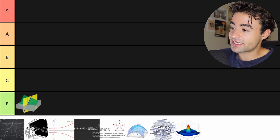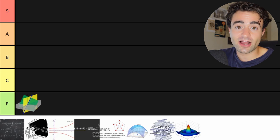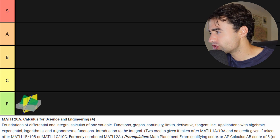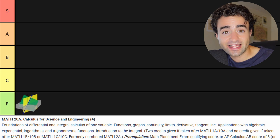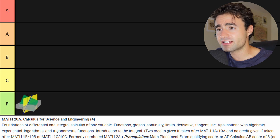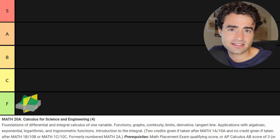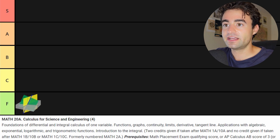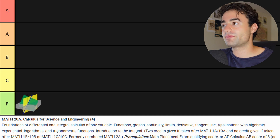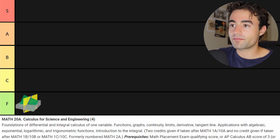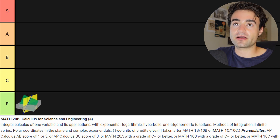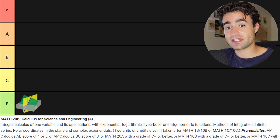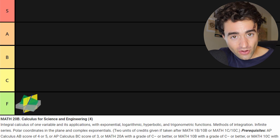This next class is a five-class calculus series called Math 20A, 20B, 20C, 20D, and 20E. This is the calculus series for STEM majors, and depending on your major, you can usually take a subset of them. Chemistry might only require Math 20A and 20B, or computer science might only require 20A, 20B, 20C. But since my major was in the mathematics department, I had to take all of them.